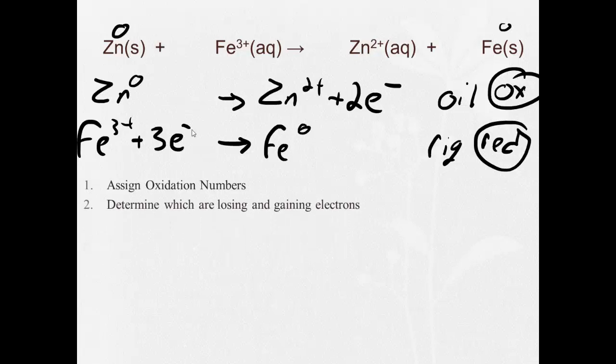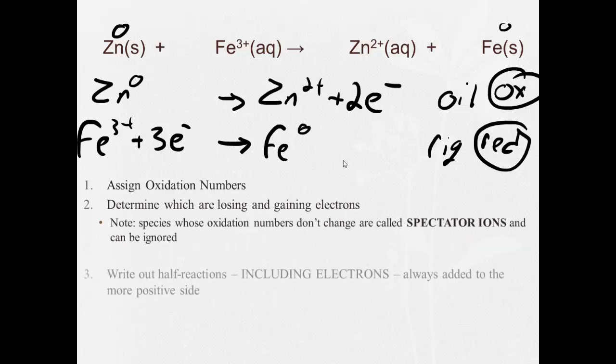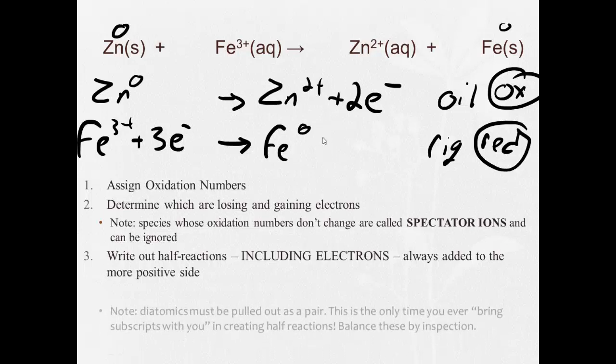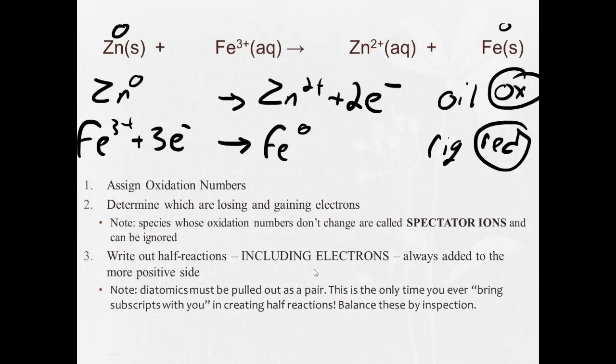Alright. So now I assigned oxidation numbers. I figured out what's gaining and losing. I wrote out my half reactions. And notice, the electrons are always added to the more positive side. Two plus is more positive than zero. So I put the electrons here. Three plus is more positive than zero. So I put the electrons here.